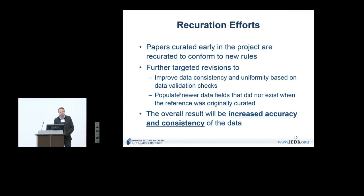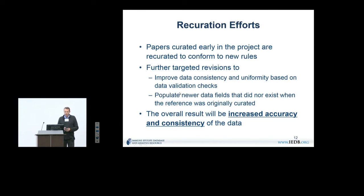Regarding inconsistent or unclear information reported by scientists: there are certain things we insist must be present in the paper. If we don't find them, we email the author to get that information. If the author doesn't respond, we ultimately won't put the paper in. We also exclude papers with direct conflicts — where the paper says X in one part and Y in another. Beyond that, we report essentially what's written, acknowledging that published literature will always contain some things that are wrong.